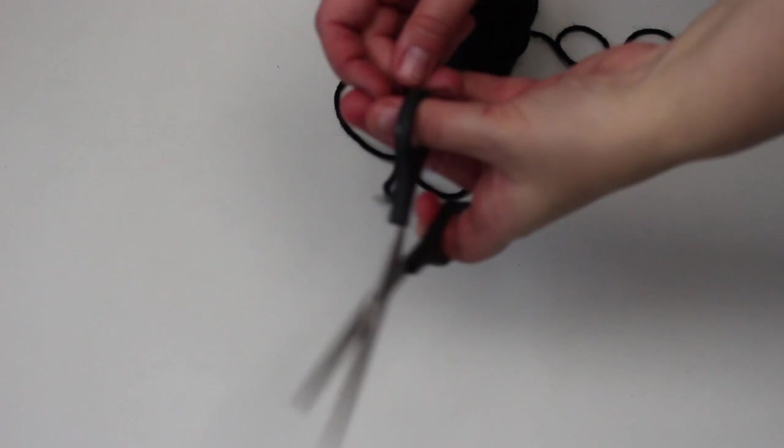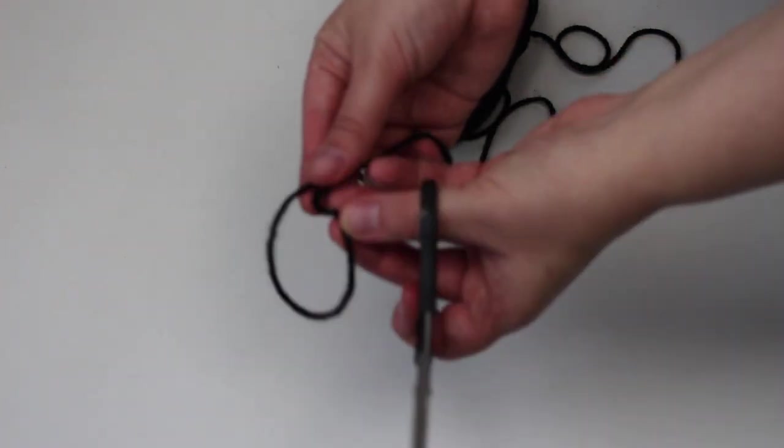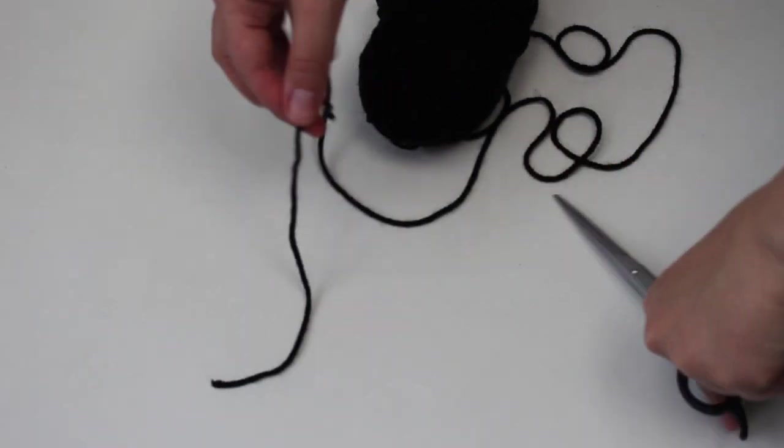We start with cutting a piece of string. This is gonna be the first inner circle, so depending on how big you want your net, that's how big you make the circle.